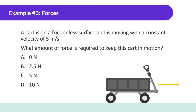A car is on a frictionless surface and is moving with a constant velocity of 5 meters per second. What amount of force is required to keep this car in motion? The correct answer is zero newtons. All objects want to keep doing what they're already doing. If something is on a frictionless surface, you don't need any force to keep it moving — there's nothing slowing it down. A force is only going to change its motion. Most of the universe is space and that's how it works.